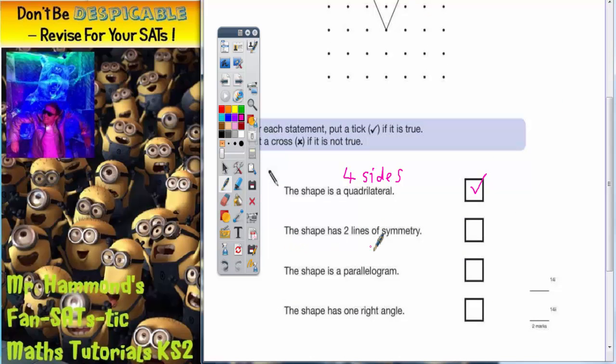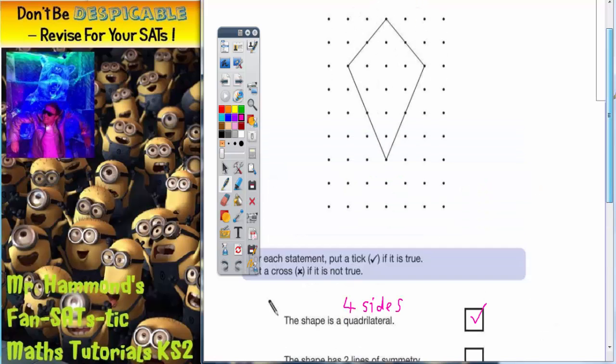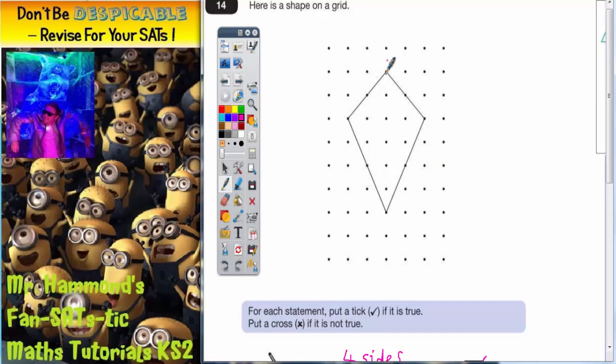Second statement says the shape has two lines of symmetry. Well, if we do a line across the middle through there, connecting those two corners, is that a line of symmetry? And the answer is no it isn't, because as you can see, the two sides of the line of symmetry are not equal. And if the two parts of the shape on either side are not equal, it can't be a line of symmetry. The bit at the bottom is a lot bigger.